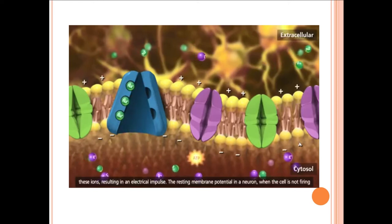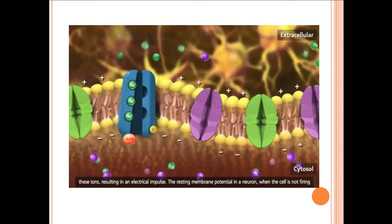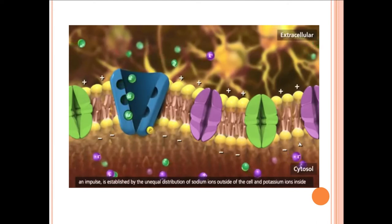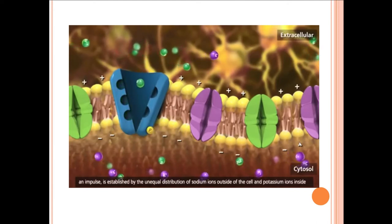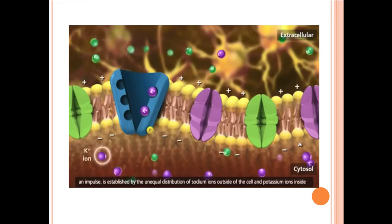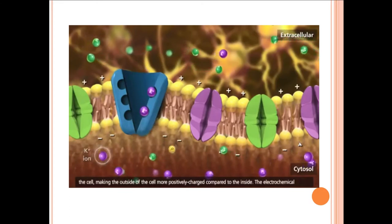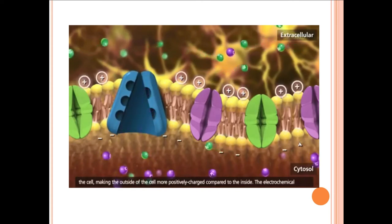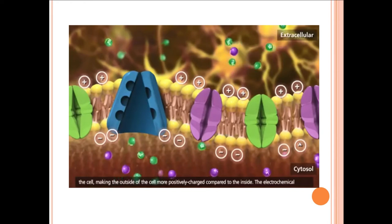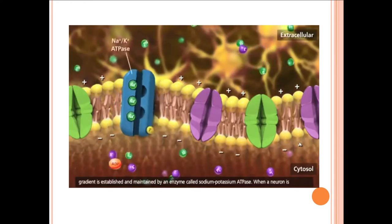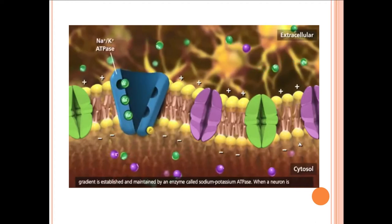The resting membrane potential in a neuron, when the cell is not firing an impulse, is established by the unequal distribution of sodium ions outside of the cell and potassium ions inside the cell, making the outside of the cell more positively charged compared to the inside. The electrochemical gradient is established and maintained by an enzyme called sodium-potassium ATPase.